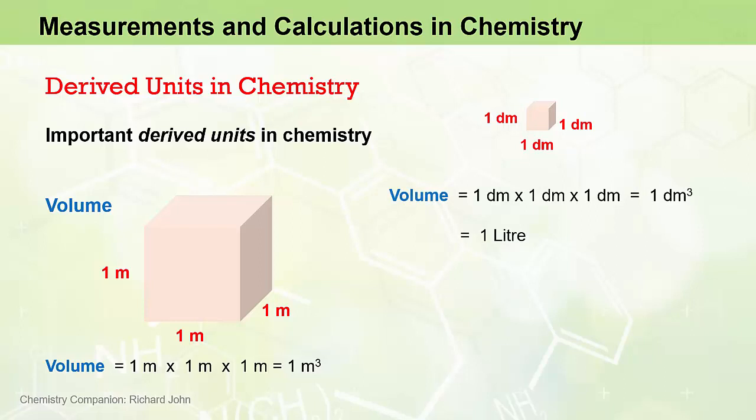The volume of this cube can be derived by multiplying one decimetre times one decimetre times one decimetre, which equals one decimetre cubed. And you should know that a decimetre cubed, or one cubic decimetre, is actually equivalent to one litre, a unit of volume that you're likely familiar with because you can easily visualise what one litre of milk looks like.